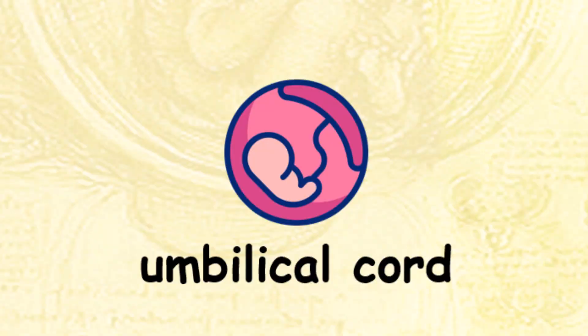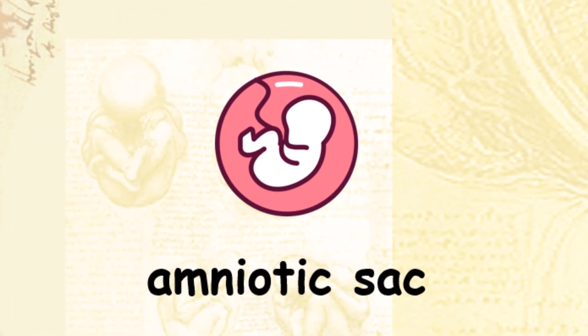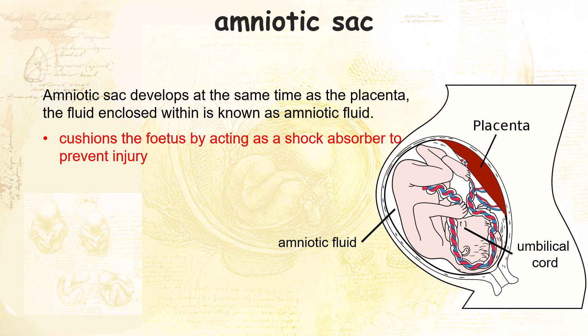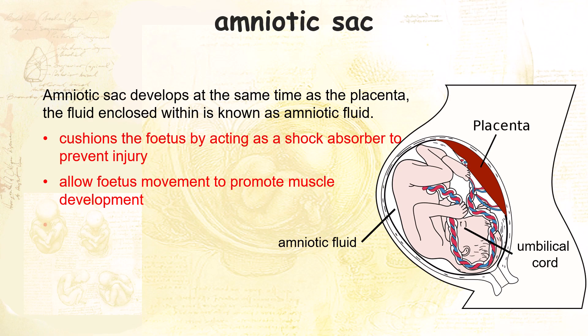The entire fetus is housed within the amniotic sac, which develops at the same time as the placenta. The fluid within the sac is known as amniotic fluid. As a liquid, it provides cushioning for the fetus, acting as a shock absorber. The fetus can also move around in it, promoting muscle development. During childbirth, the amniotic sac will break, and the liquid will make the birth canal wet, providing lubrication during birth.